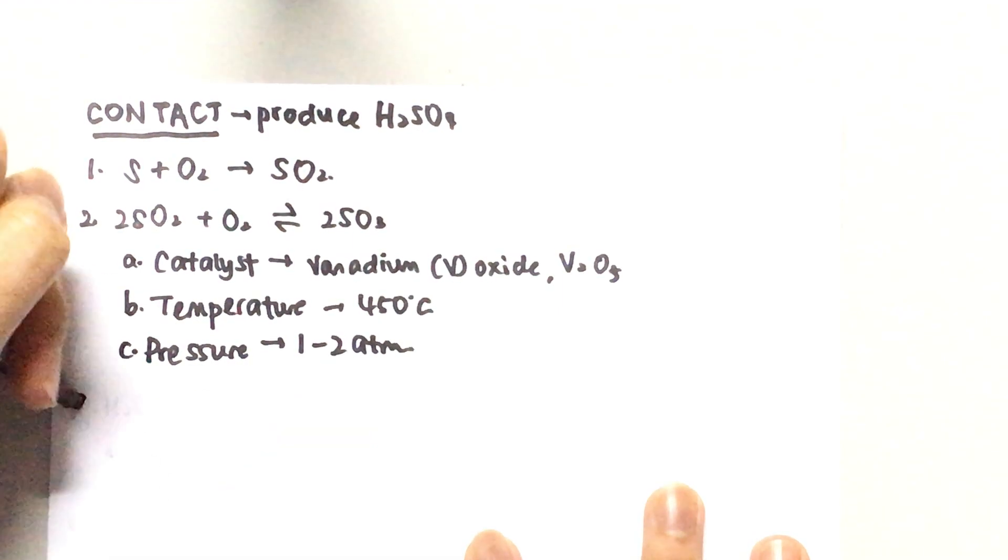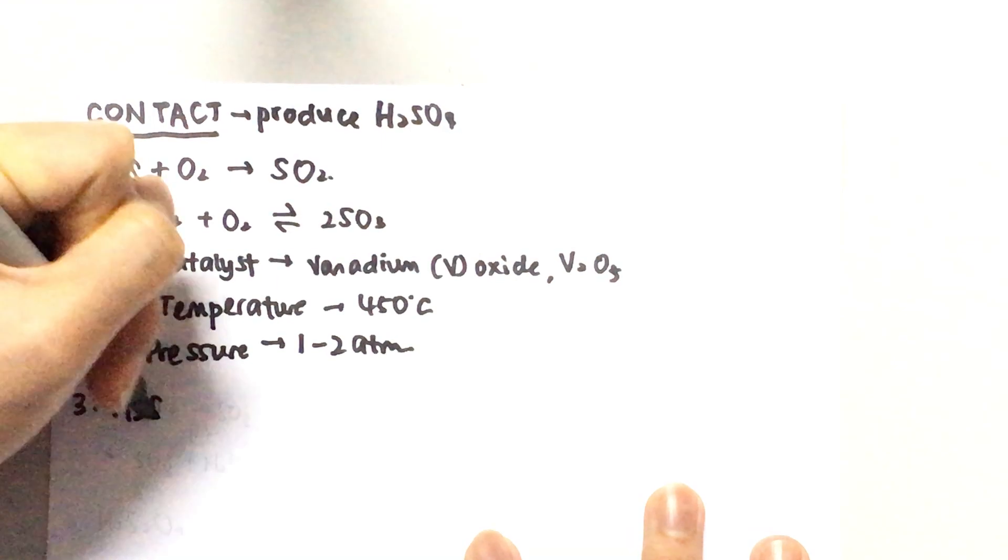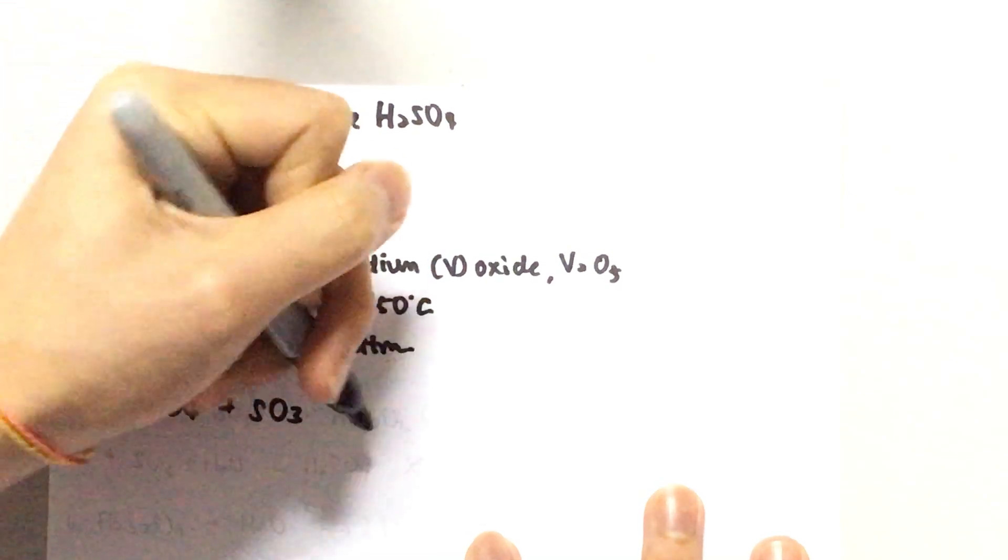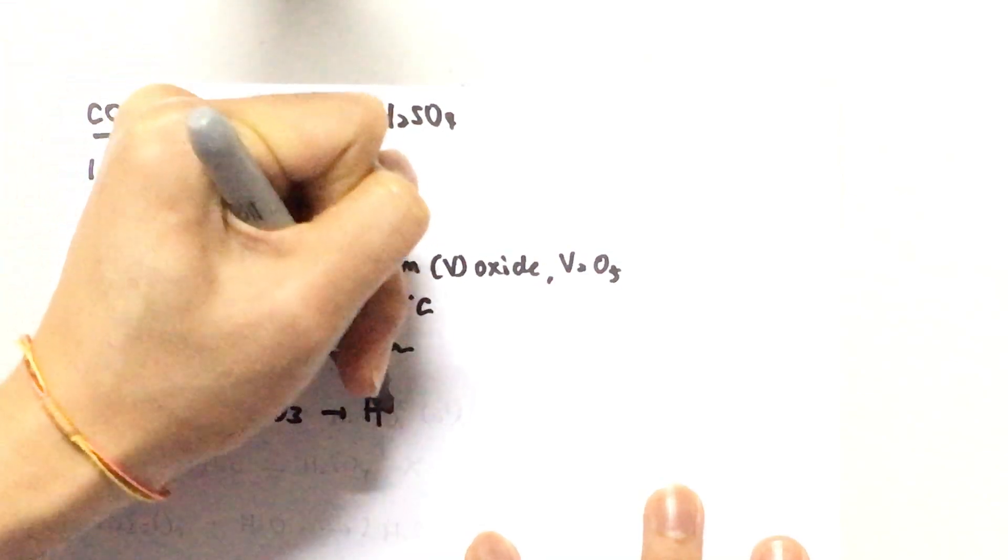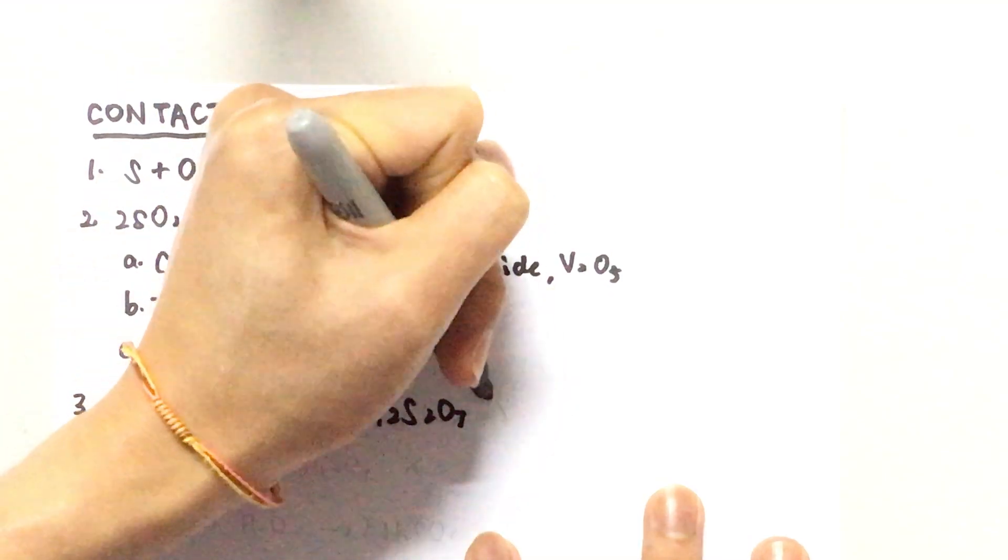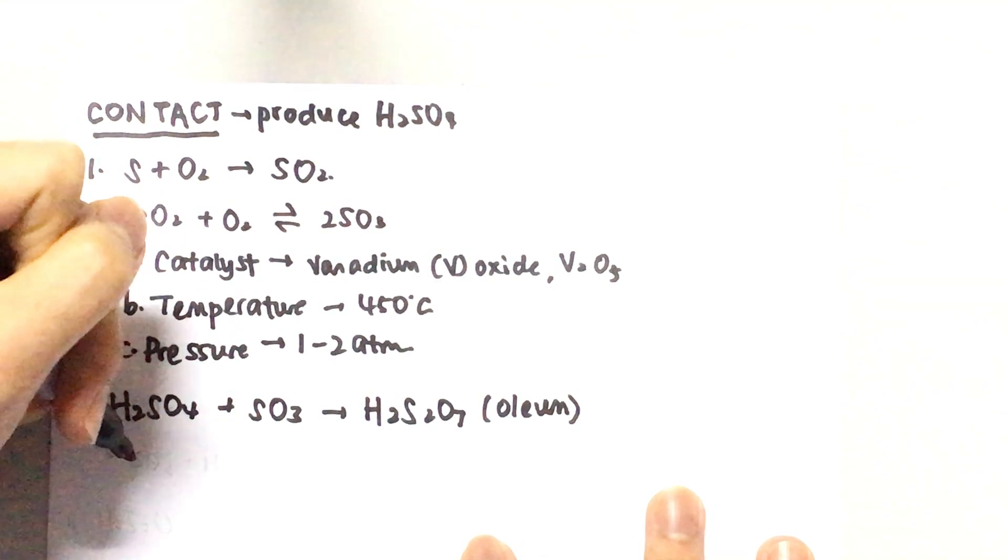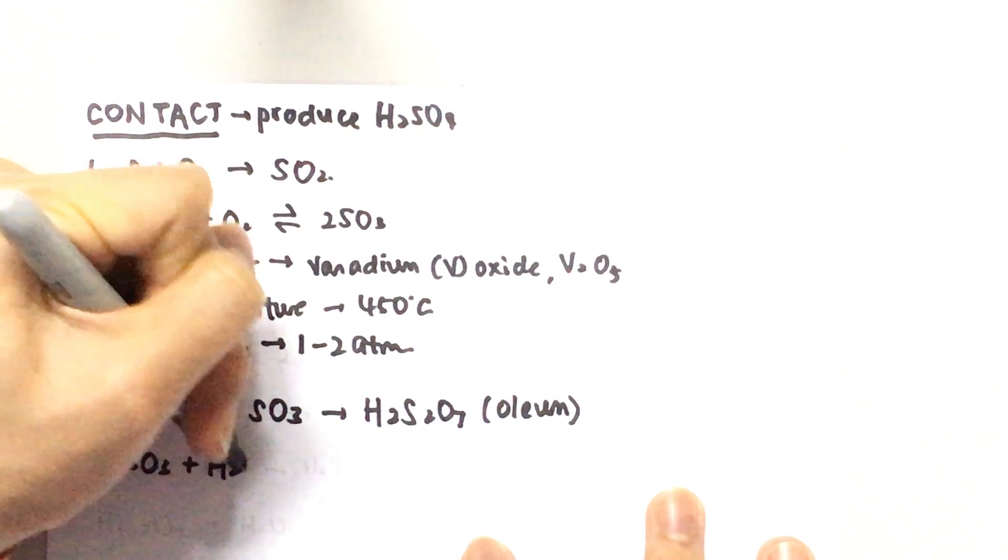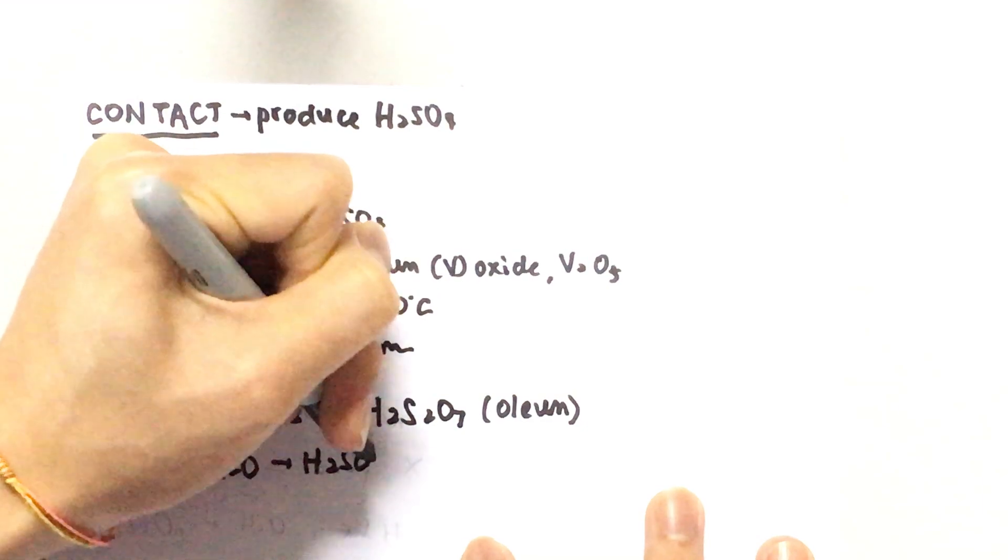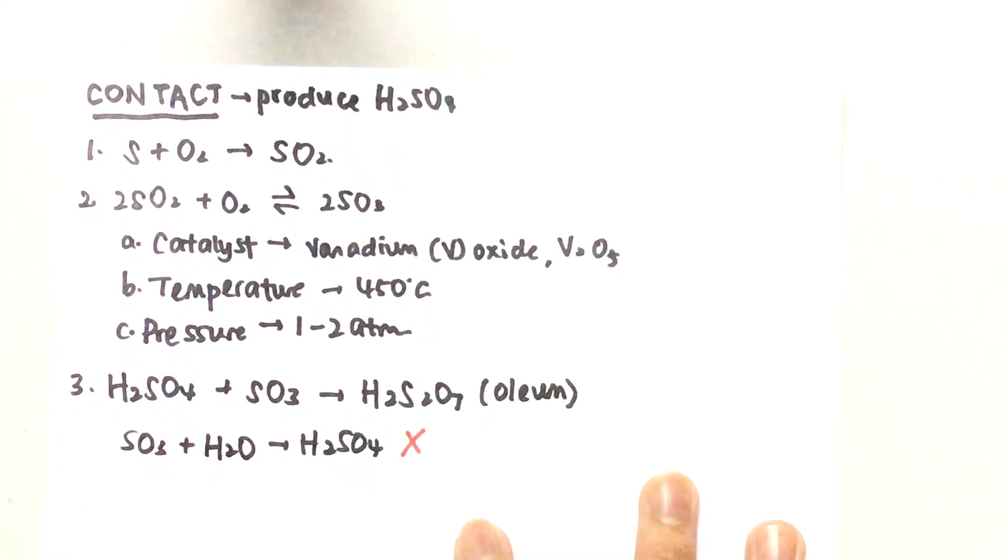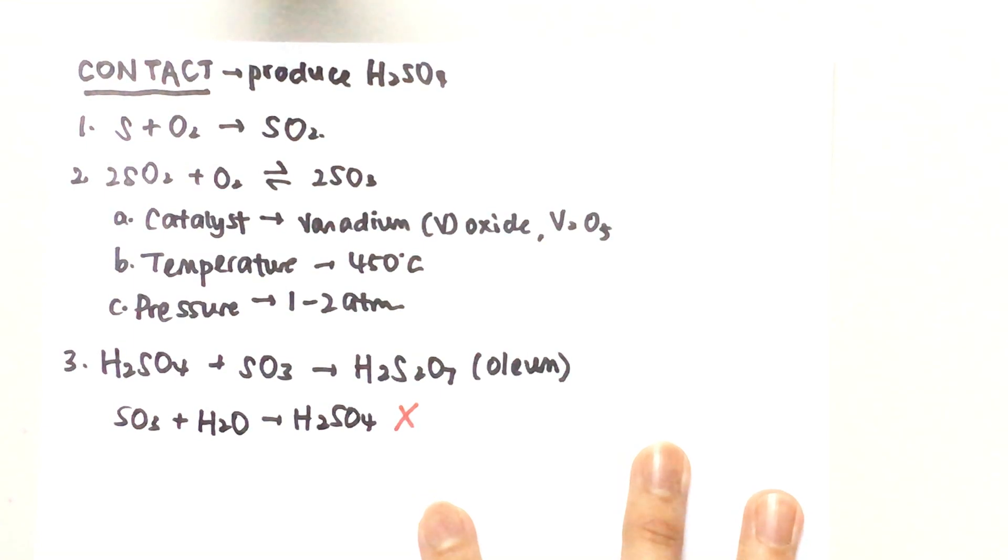Moving on to the third step, I'm going to use concentrated sulfuric acid and react it with sulfur trioxide to produce this product H2S2O7, known as oleum. This is like an intermediate step because sulfur trioxide can actually react with water to produce sulfuric acid as well, but this reaction is not used at all because it's very violent and the sulfuric acid produced is in a mist form, so it's very difficult to collect as well.